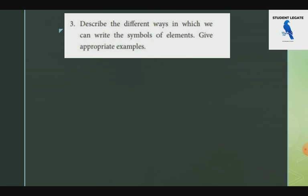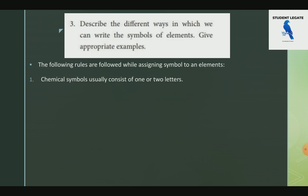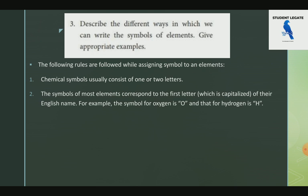Describe the different ways in which we can write the symbol of an element, with appropriate examples. Chemical symbols usually consist of one or two letters. We write the first letter of the element's name as a capital letter. For example, Oxygen is O and Hydrogen is H. Carbon is C.